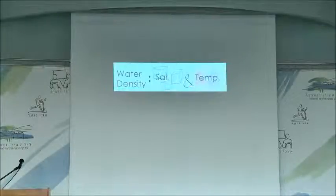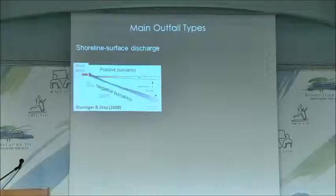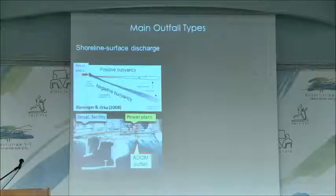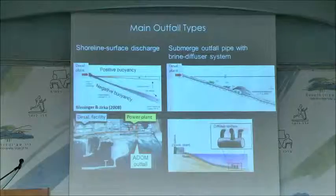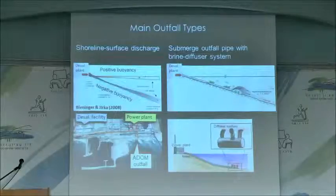Water density is governed by salinity and temperature — if water is more saline it will sink, and if it is hot it will rise. So we have two options to diffuse the water back into the environment: positive buoyancy and negative buoyancy. In Ashkelon, it is designed to have positive buoyancy; however, once some of the power plant units are not circulating, it tends sometimes to sink. In Sorek, there is a diffuser system that takes the brine farther from shore, and one process of this technology is that it can avoid some stress to shallow organisms.